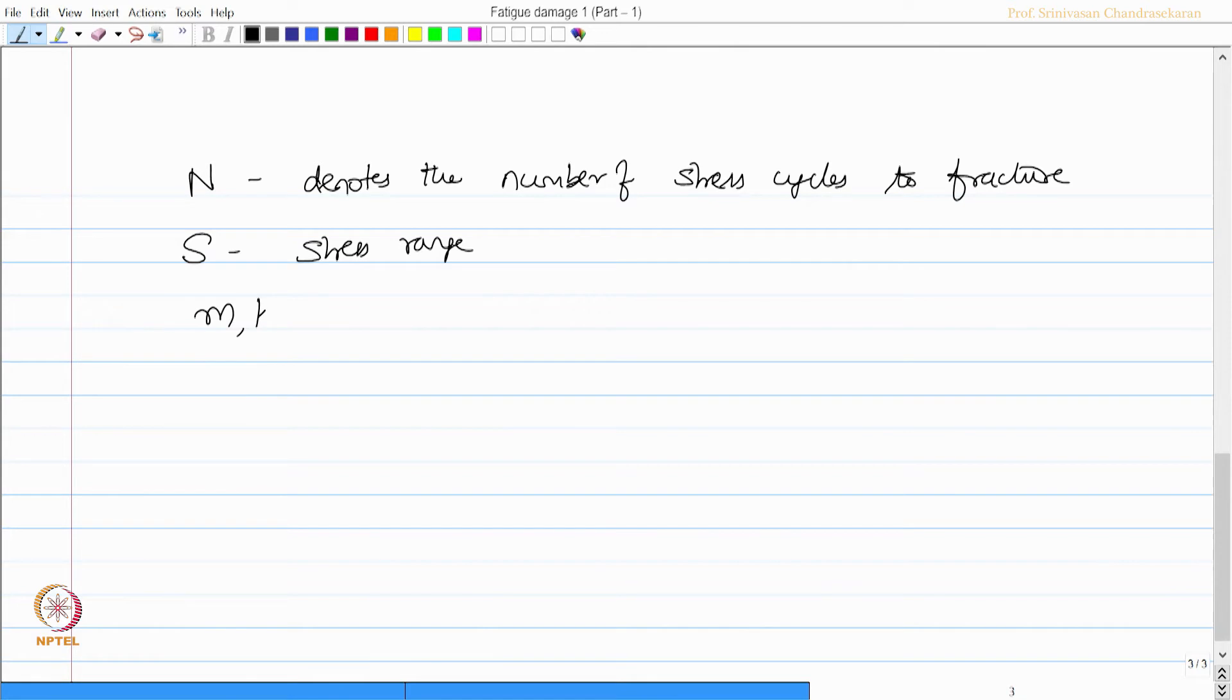M and k are actually material constants. Usually m varies anywhere from 3 to 5 for marine steel.